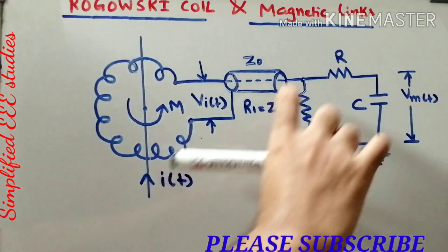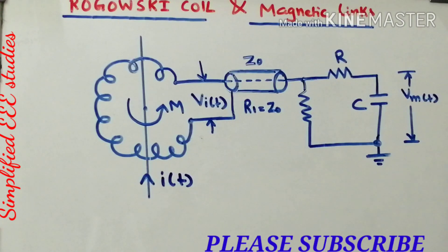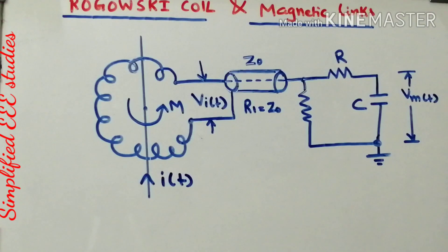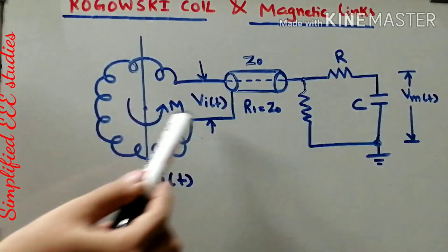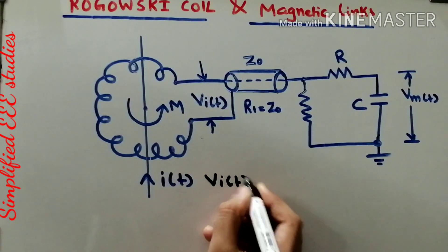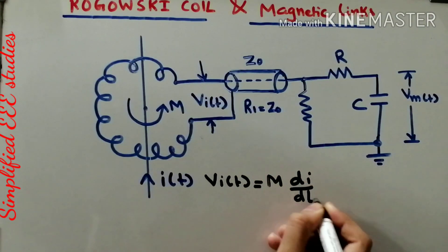If you connect an integrator, you can get the total voltage at the CRO. The voltage induced in the coil, VI, is proportional to the rate of change of current in the straight conductor. This can be calculated by applying Faraday's laws of electromagnetic induction. VI is given by M·di/dt, where M is the mutual inductance of the Rogowski coil.